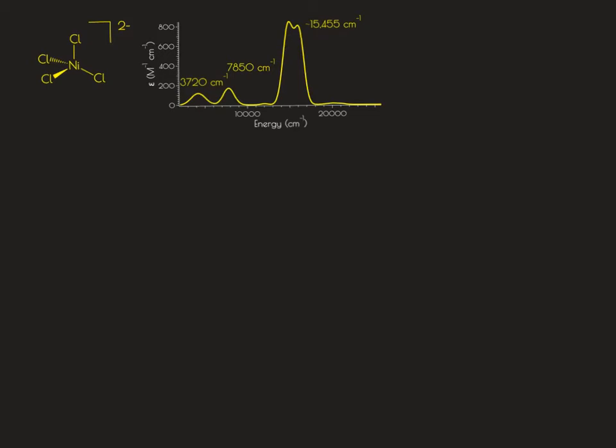We're going to analyze the electronic absorption spectrum using the Tanabe-Sugano diagram for nickel tetrachloride di-anion. This is a nickel 2+ compound, so it is a nickel 3D8 species. This is in TD symmetry, so we're going to use the D2 Tanabe-Sugano diagram.